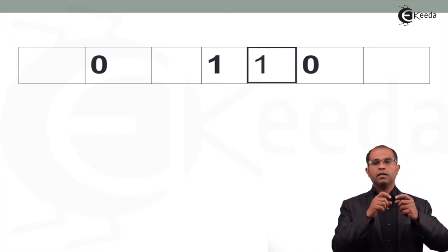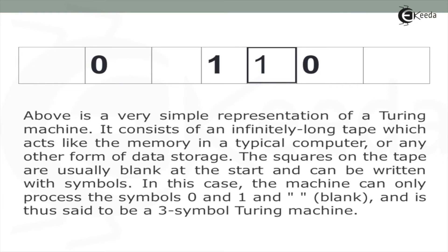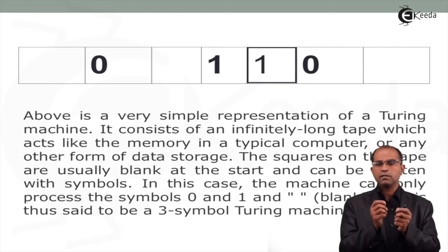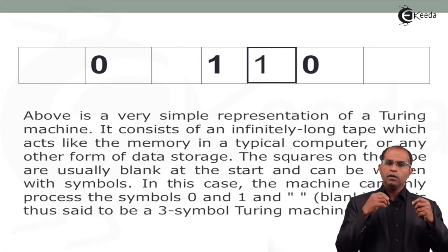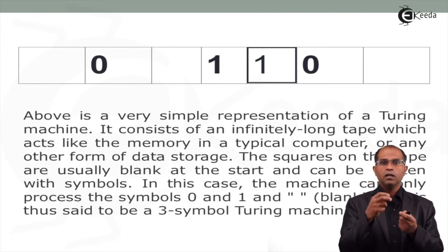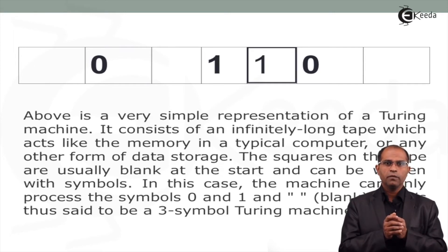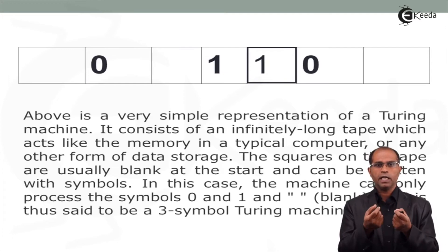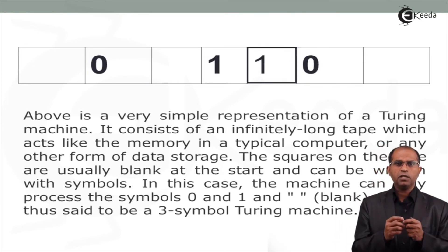The Turing machine can be visualized as a tape. Here the tape has bits: 0, blank space, 1, blank space, and 0. The tape head is highlighted in black. This is a simple Turing machine with an infinitely long tape that acts like a typical memory. The squares on the tape represent blocks, and data can be stored in binary or decimal format.